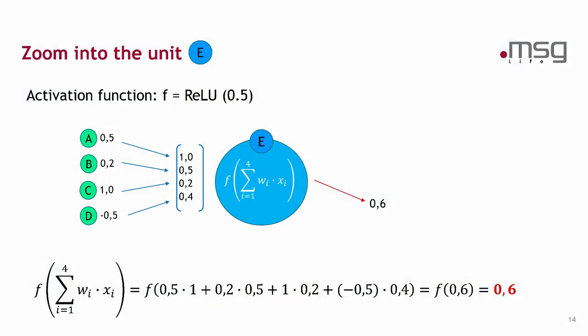And then I have calculated the convex combination between the inputs and the weights. So I have taken the product of every input with the weight, then I sum them up, and then I have applied the activation function ReLU 0.5 and then I get 0.6 the output of the unit E. And I have done this for every single unit here in this very simple example. And then I get at the output units the output 0.9 and 1.2.